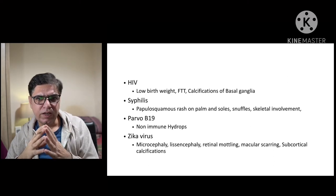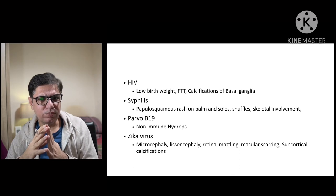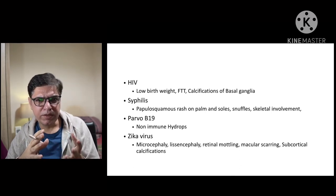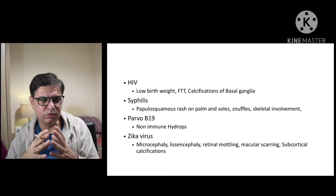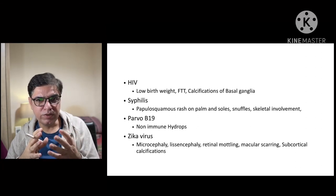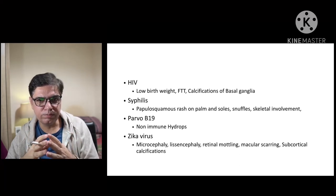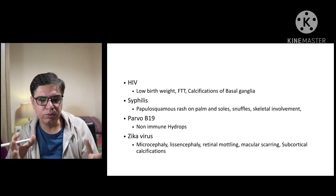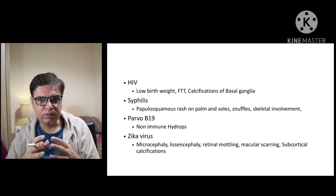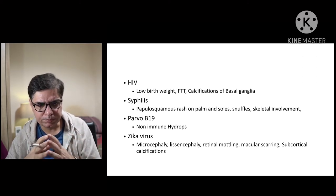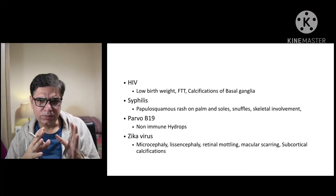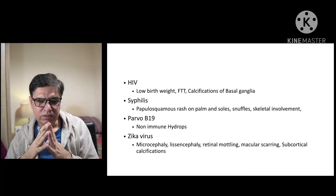Parvovirus B19 can be transmitted in utero and is the most common cause of non-immune hydrops fetalis, which can be picked up on antenatal scans. Doppler studies can detect fetal anemia. It is usually a fatal condition if there is massive hydrops — the child may be born as a stillbirth or die soon after birth.